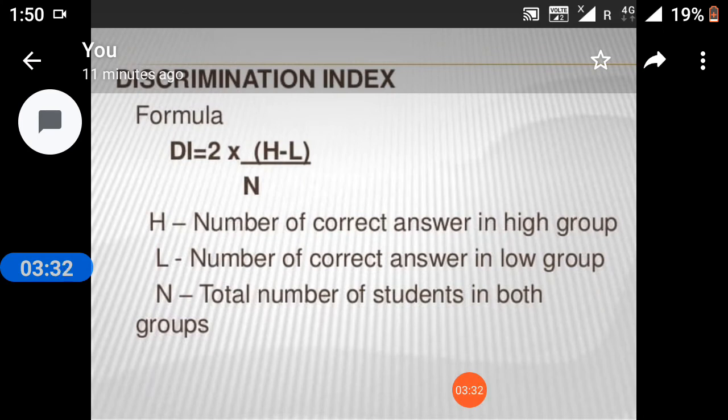Discrimination index formula: D equals 2 into H minus L upon N. H means number of correct answers in high group. L means number of correct answers in low group. And N equals total number of students in both groups.